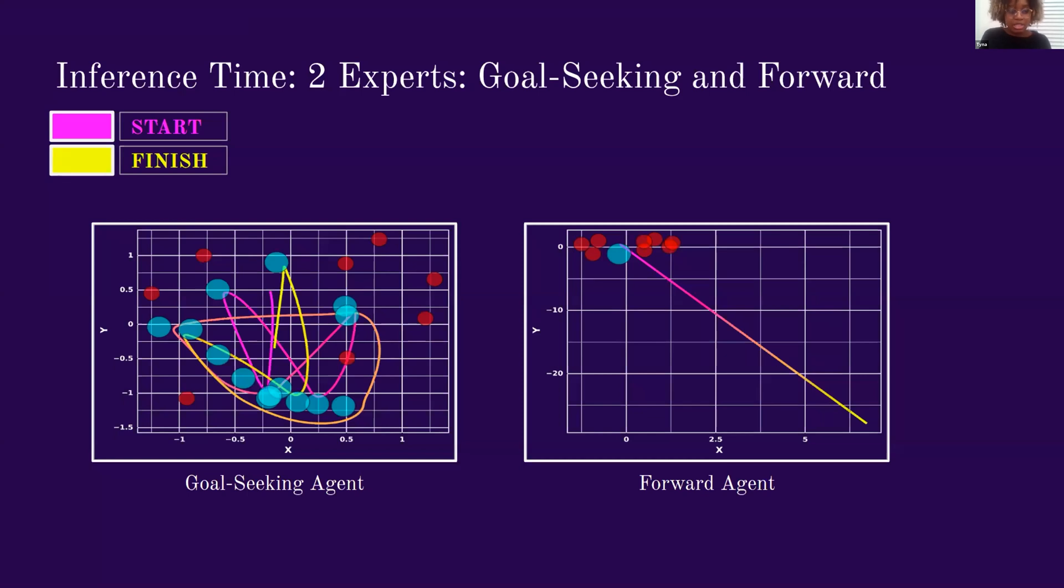I want to emphasize here that in all of these plots that you'll see, the setting is exactly the same. It's seeded so that the placements of the goals, the hazards, etc. are exactly the same. So the only thing that we change is the context vector that we feed to the trained model.